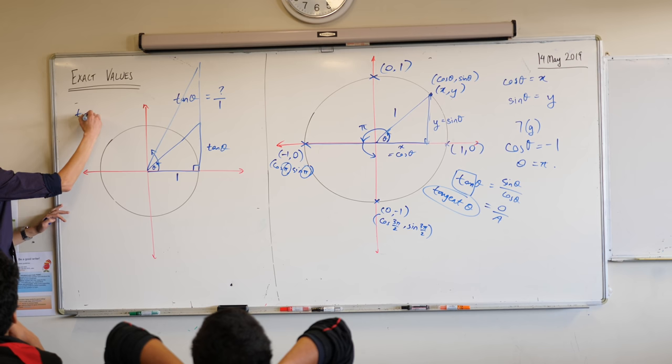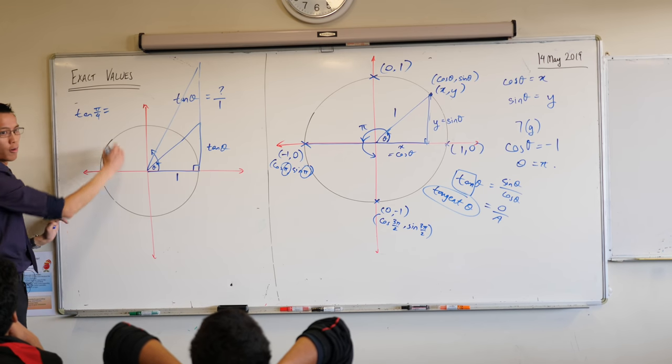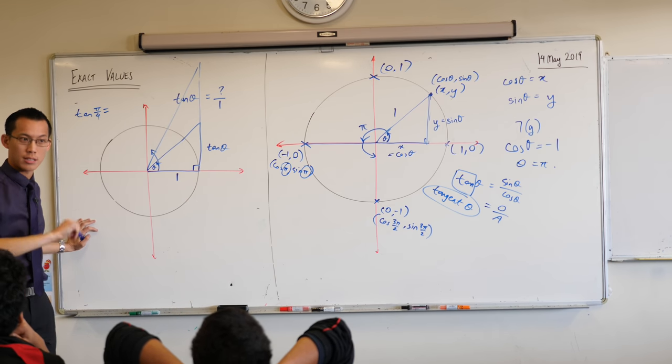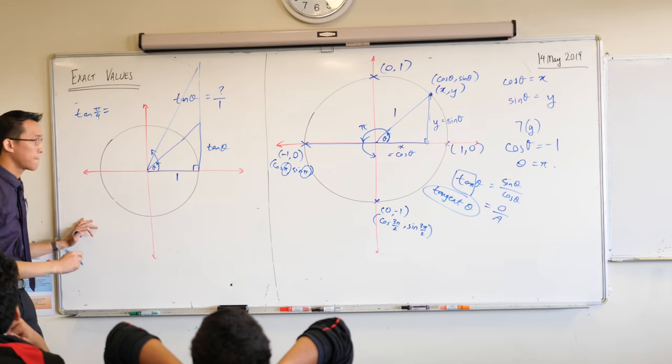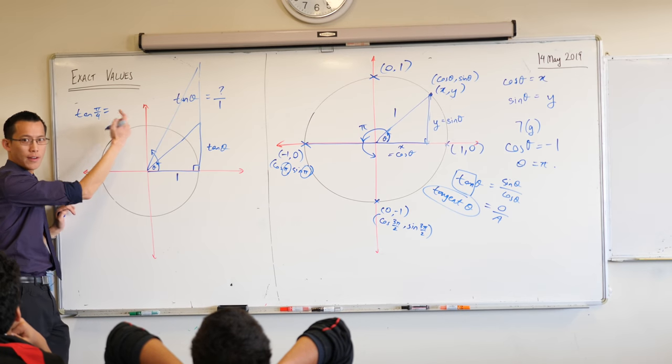So, for instance, if we said, what did we say, tan of pi on 4, that's tan of 45 degrees. This is a number you should know, what is it? What's the exact value, tan of 45 degrees?